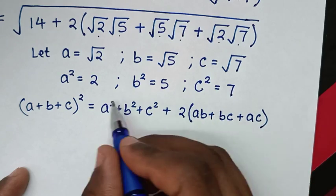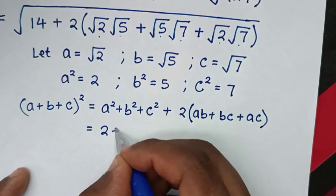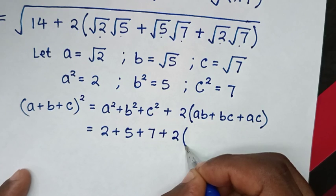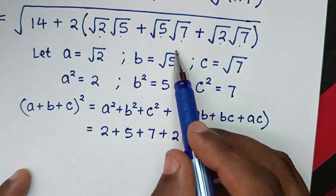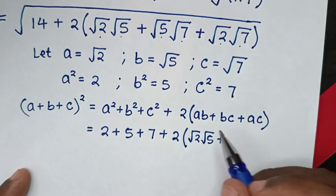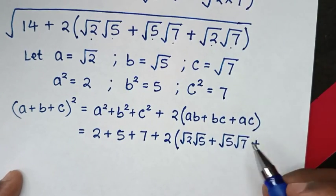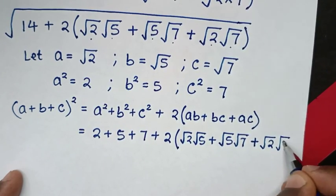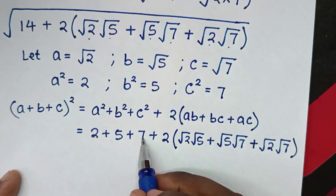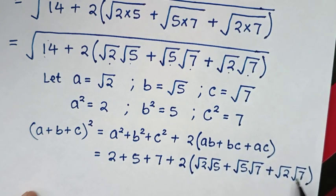Then from this part, the right side is equal to A squared which is 2, plus B squared which is 5, plus C squared which is 7, plus 2 bracket square root of 2 times square root of 5 plus square root of 5 times square root of 7. Now the sum 2 plus 5 is 7, and 7 plus 7 is 14, which matches the 14 here. This part here is the same as this part.